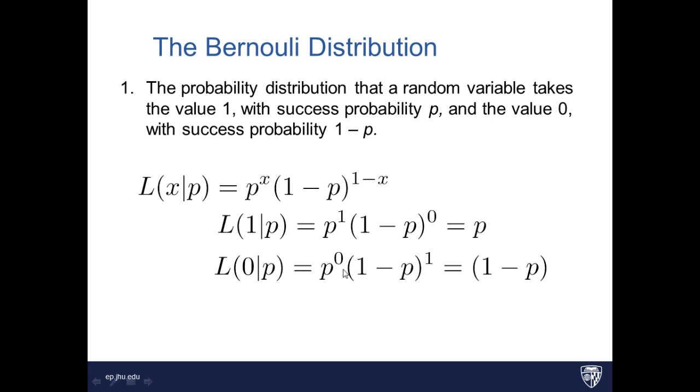If we look at the likelihood of getting a zero, right, then this term becomes p raised to the zero is one. This term is raised to the one power, and so you get one minus p. So with this distribution, you are going to get the value of one, the presence of a link, with likelihood p, and the absence of a link with probability one minus p. Makes sense.